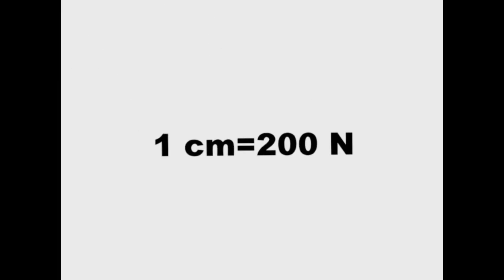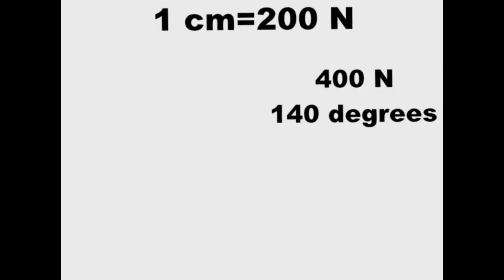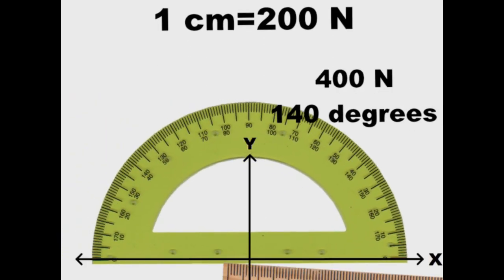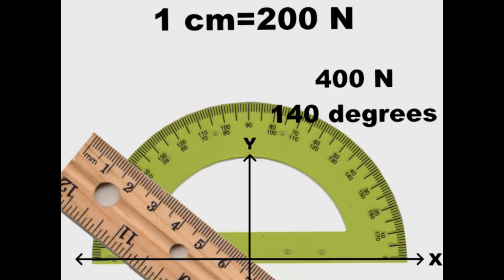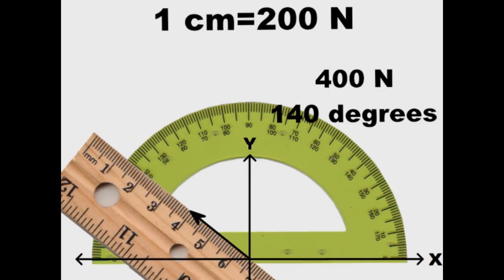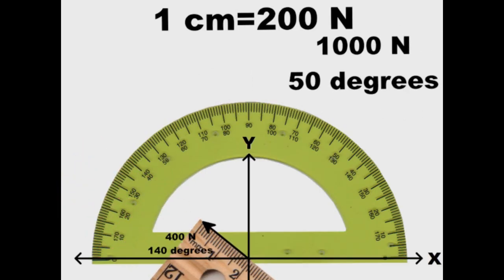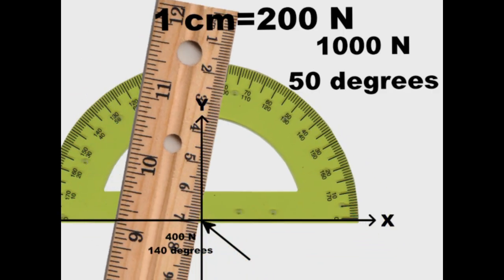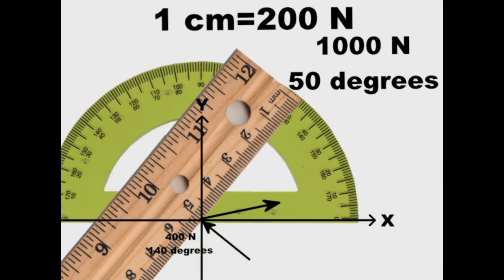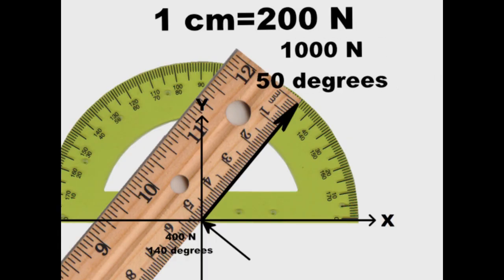For example, 1 centimeter is equal to 200 newtons. If we are adding up force vectors, we do as we did with the distance vectors. A vector that is 400 newtons and 140 degrees would have to be drawn as 2 centimeters with the same angle. A vector that is 1000 newtons and 50 degrees would have to be drawn as 5 centimeters at 50 degrees.